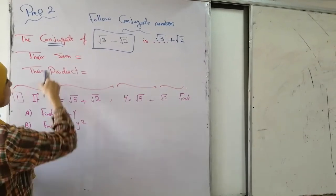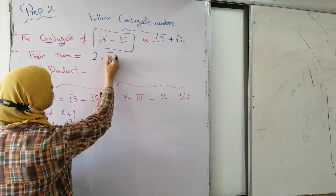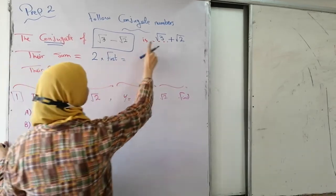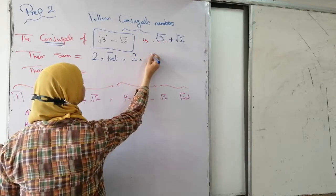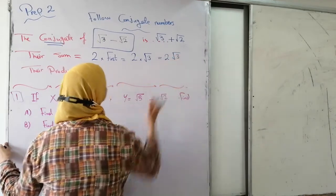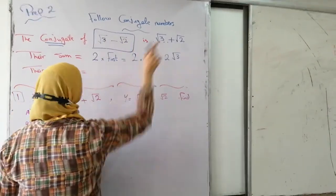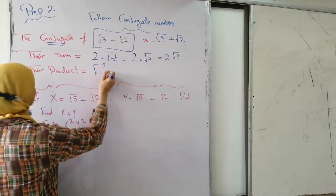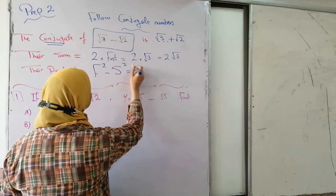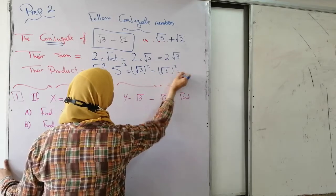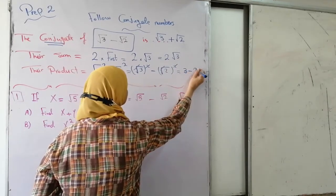Now let's find the sum of these two conjugate numbers. The first term is root 3, so the sum gives 2 times root 3. For the product: the product of conjugates equals first squared minus second squared. The first is root 3, so root 3 to the power 2 minus root 2 to the power 2. The root takes the power and flies away, leaving 3 minus 2, which equals 1.